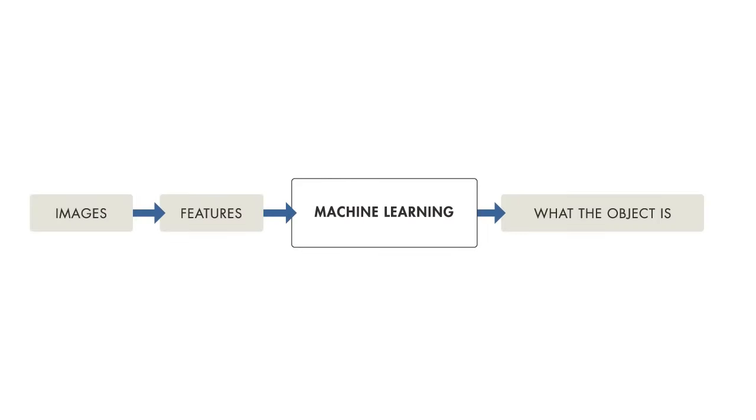When solving a machine learning problem, you follow a specific workflow. You start with an image, and then you extract relevant features from it. Then you create a model that describes or predicts the object.